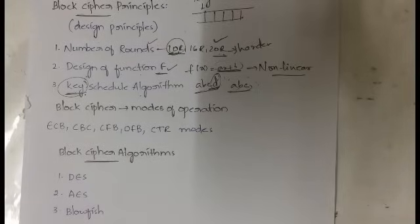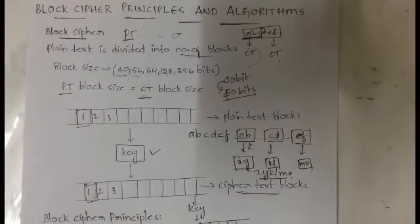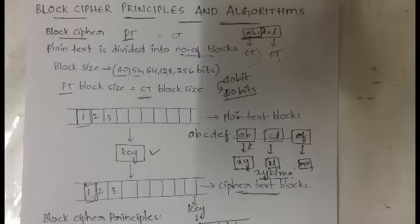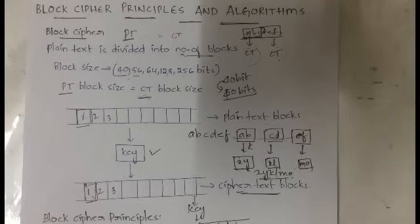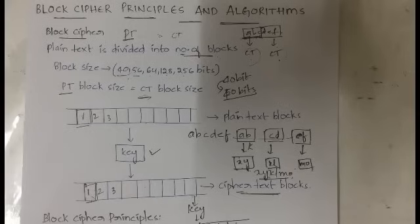That's all for this video. I hope you are clear about the concept of block cipher — you divide the plain text into individual blocks, convert each block into cipher text, and then join all the cipher text blocks to get the combined cipher text. If you found this useful, hit the like button, subscribe to the channel, and hit the bell icon to receive notifications whenever I post a video. Don't forget to share it with your friends.